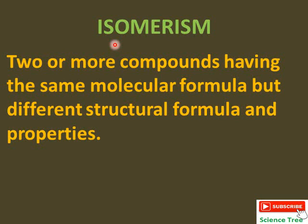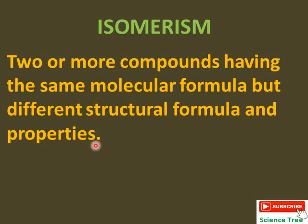Iso means same and merism means composition. When two or more compounds have the same molecular formula but different structural formula, and if their structure is different, their properties will also be affected. In this lecture, we will discuss how isomers are formed, and I will also tell you about a very tricky way to get isomers of alkanes in just one second.